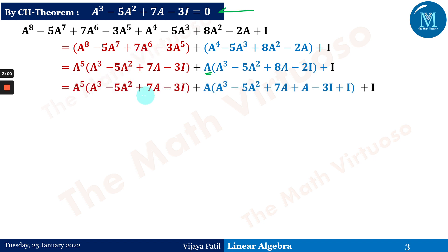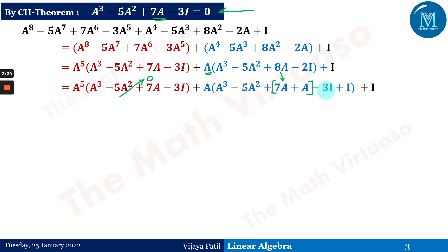The reason we do this is that A³ - 5A² + 7A - 3I equals zero by the CH theorem. We need to set up the same form. In the blue bracket we have 8A but we need 7A, so we write 8A as 7A + A. Similarly, we have -2I but need -3I, so we write -3I + I, again reaching the same form that equals zero.